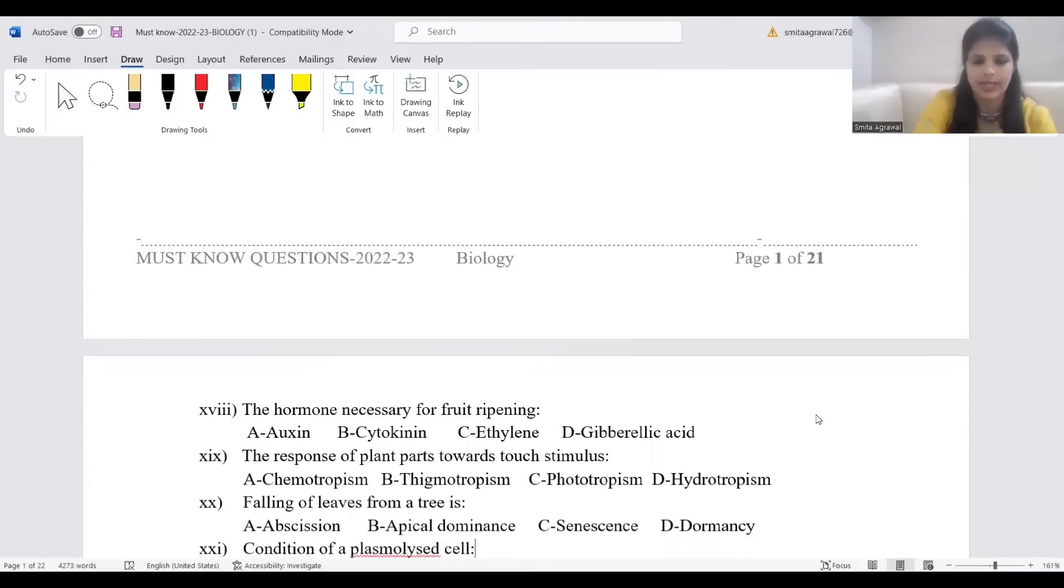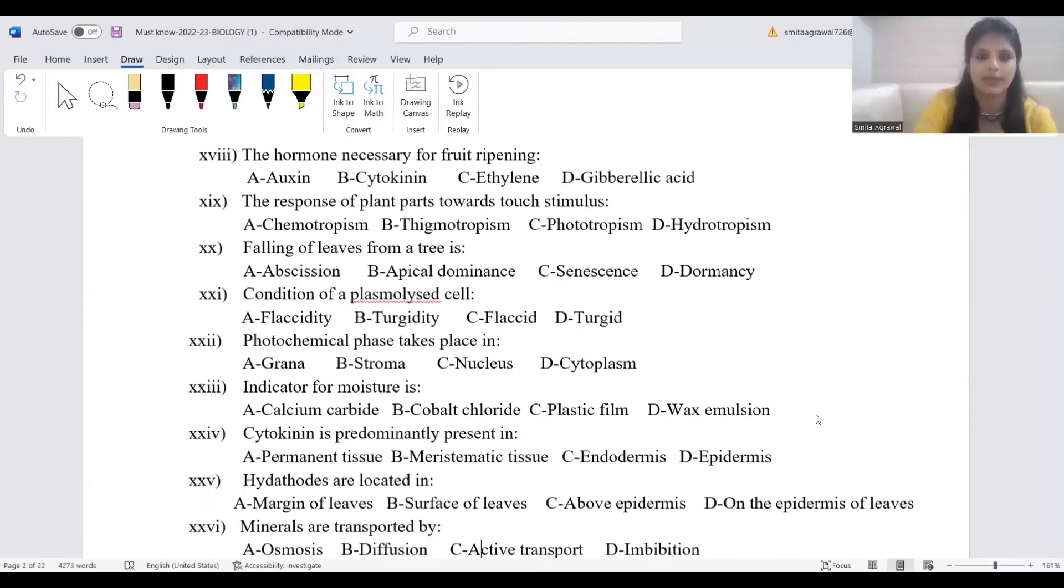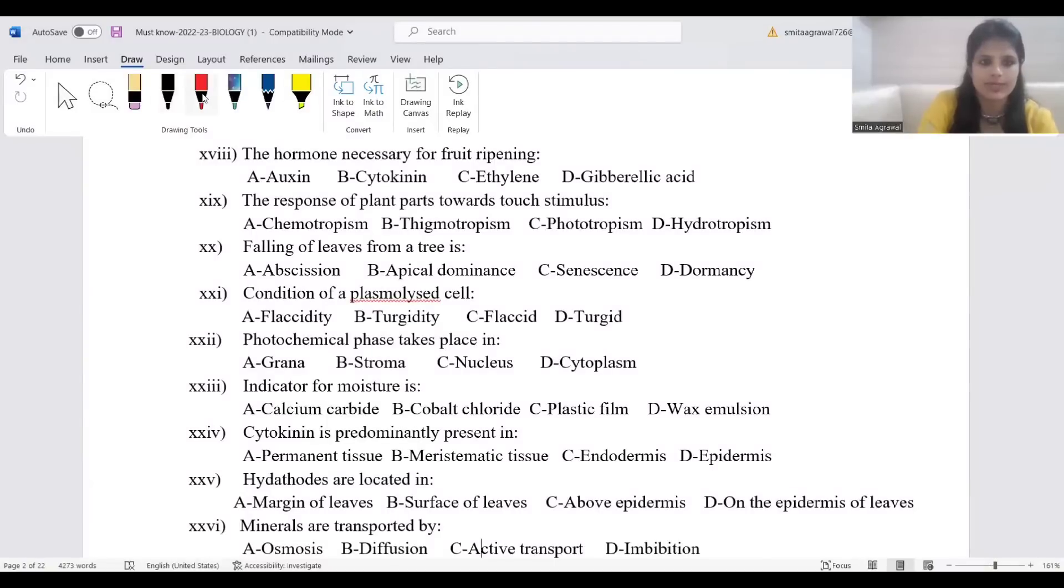The hormone responsible for fruit ripening: ethylene. Ethylene is the only hormone that is a gaseous hormone. The response of plant parts towards touch stimulus, the answer is thigmotropism. Falling of leaves from a tree is abscission.